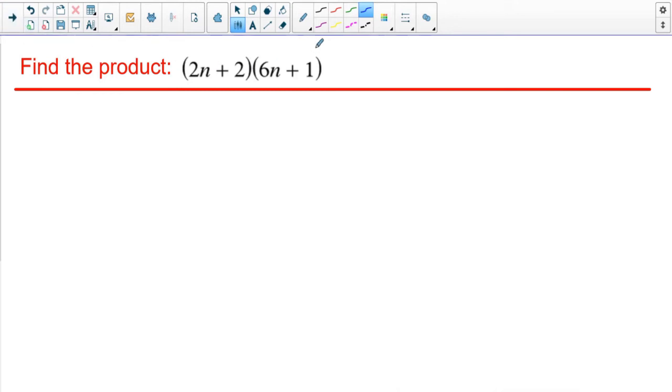So on this next one here, you can't really distribute. You could foil the first, the outer, and then the inner, and the last. You could do that. That was foiling. But again, I'm going to show you the box method on this one just to show you that it works with any set of polynomials. So first, I'm going to put 2N and plus 2 on the side, or you could put it on the top. It doesn't matter. We'll get the same answer.